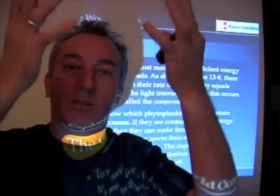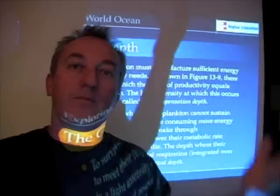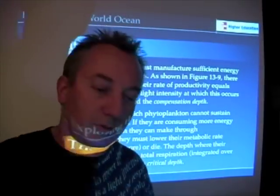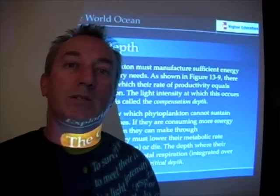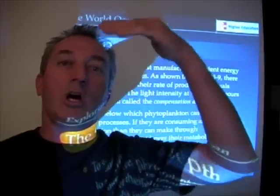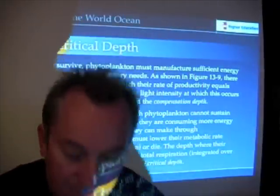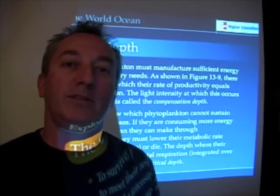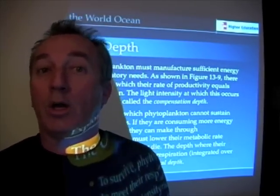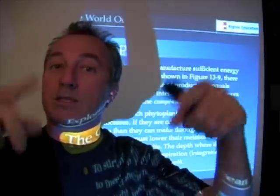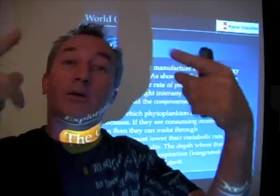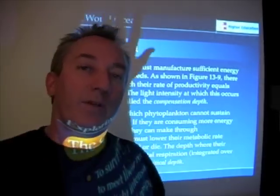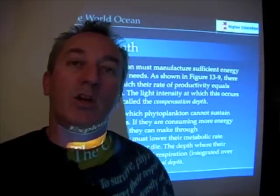Phytoplankton aren't in a stable, fixed environment. They're mixing around — they go from the surface to depth as a result of vertical mixing. If vertical mixing is deep, the overall light environment that phytoplankton see is going to be very low. Whereas if vertical mixing and the mixed layer depth is shallow, then phytoplankton will see lots of light and have very high rates of productivity.